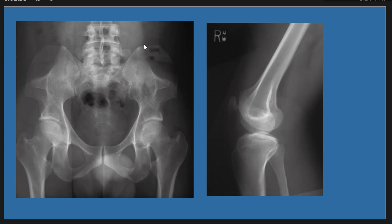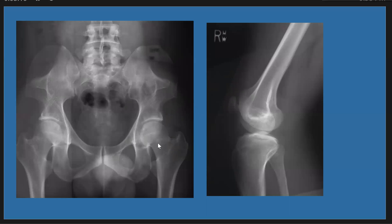So, to summarize: Nail-Patella Syndrome includes hypoplastic patella, bilateral iliac horns posteriorly located — also called Fong lesions — and also flared iliac crest, and protuberant anterior iliac spine. This is a case of Nail-Patella Syndrome. Thank you for listening and reviewing.